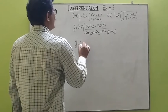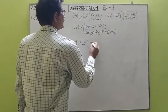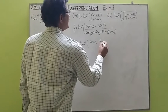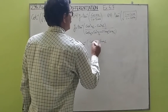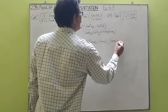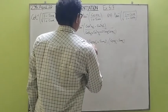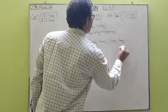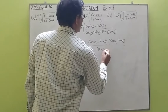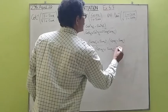So it becomes y equals tan inverse of (cos(x/2) plus sin(x/2)) times (cos(x/2) minus sin(x/2)), whole upon (cos(x/2) plus sin(x/2)) whole square.